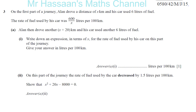This is the question. On the first part of a journey, Alan drove a distance of X kilometers and his car used 6 liters of fuel. The rate of fuel used by his car was 600 over X liters per 100 kilometers. Alan then drove another X plus 20 kilometers and his car used another 6 liters of fuel. Write down an expression in terms of X for the rate of fuel used by his car on this part of the journey, in liters per 100 kilometers.